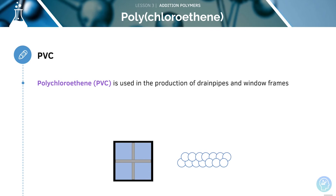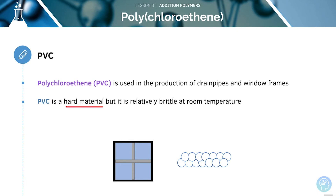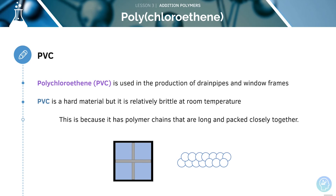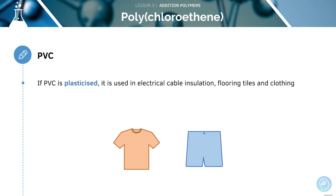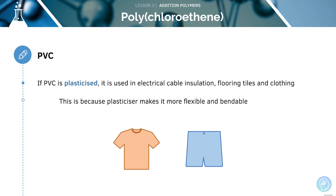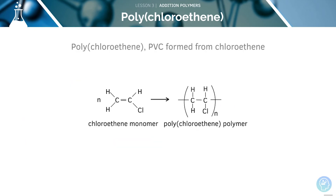Polychloroethene, or PVC, is used in the production of drain pipes and window frames. PVC is a hard material, but it is relatively brittle at room temperature, because it has polymer chains that are long and packed closely together. If PVC is plasticised, it is used in electrical cable insulation, flooring tiles, and clothing. When a plasticiser is added to PVC, this makes it more flexible and bendable. Here we can see that PVC is formed from chloroethene.